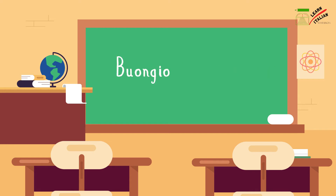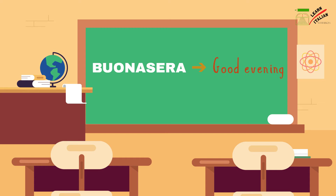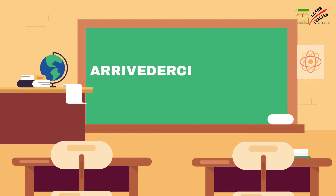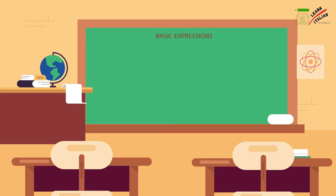We mostly say buongiorno or buona sera. Buona sera means good evening. Buona notte means good night. Arrivederla is a formal way of saying goodbye, but this is used for a single person — for example, when telling your doctor arrivederla. Arrivederci can be used formally and informally and can also be used for a group of people, for example telling your group of friends arrivederci.